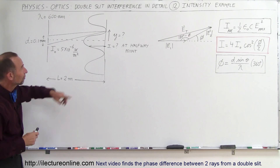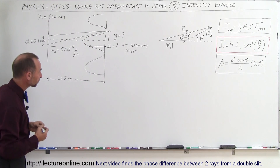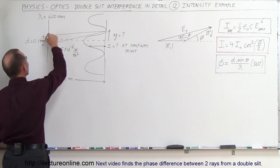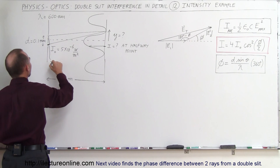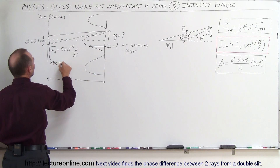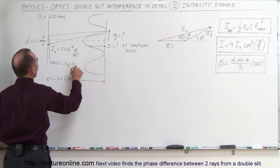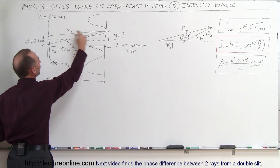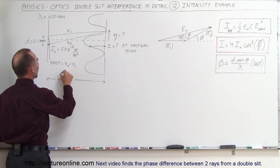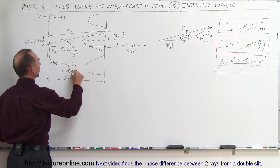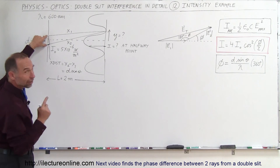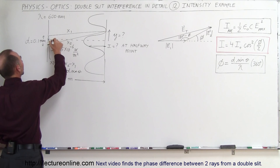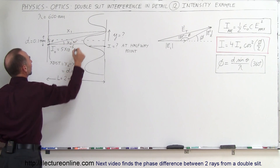The first thing we're going to do is find the distance to the first minimum, so we need to determine the extra distance traveled. The extra distance traveled is equal to x2 minus x1, x2 being the distance traveled by the second beam, x1 the distance by the first beam, and that can be defined as d sine theta — d being the hypotenuse of this little triangle here, and theta being the angle right there.